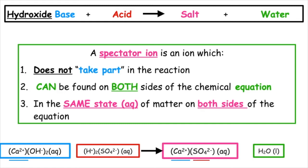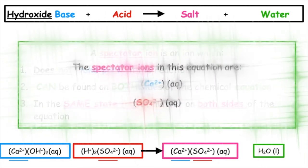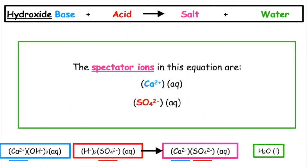The sulfate of the calcium sulfate — that's our salt — is in the aqueous solution. And we can also see that the sulfate ion, SO4²⁻, is found on the reactant side, in our sulfuric acid. So the two spectator ions are our calcium Ca²⁺ ion and our sulfate SO4²⁻ ion.